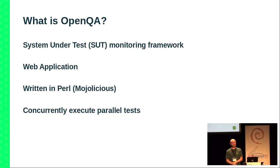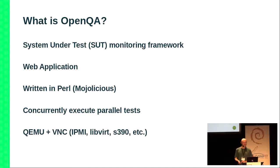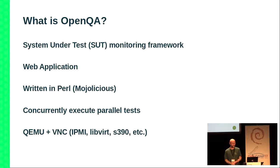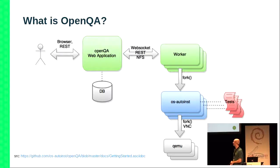The nice thing about OpenQA is that it can run multiple testing scenarios at the same time using multiple backends. Generally what is used is QEMU plus VNC for executing tests — that's the most common way it runs tests. But there are also other backends: IPMI, live or direct hardware tests, and LPAR or S390, which has a different backend.